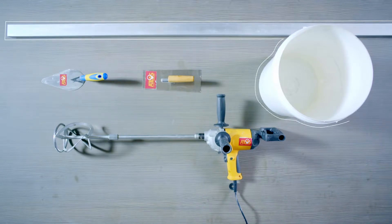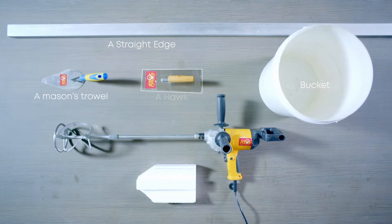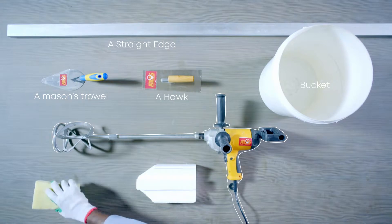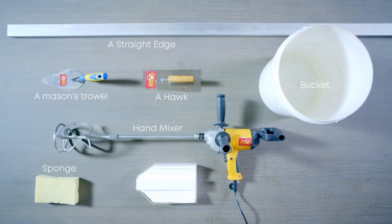Let's look at how to prepare Tokyo Supercast White for application. These are the tools you'll need: a bucket, a hawk, a hand mixer, a mason's trowel or a Japanese float, a sponge, a straight edge or wooden float.